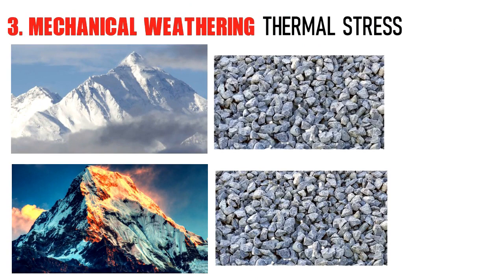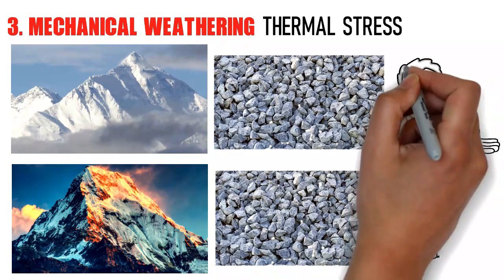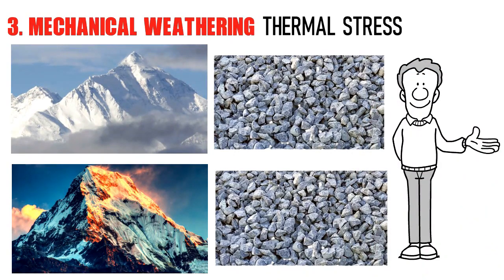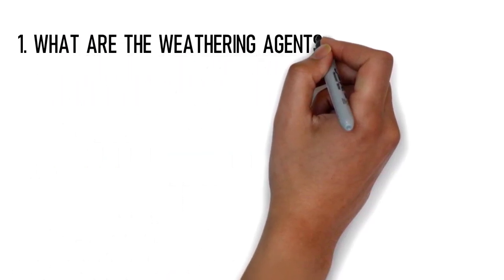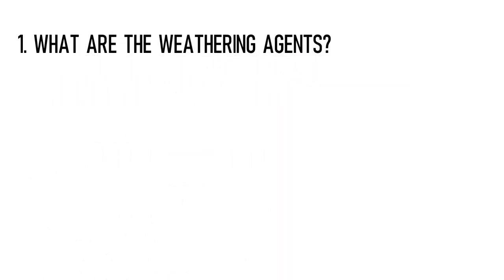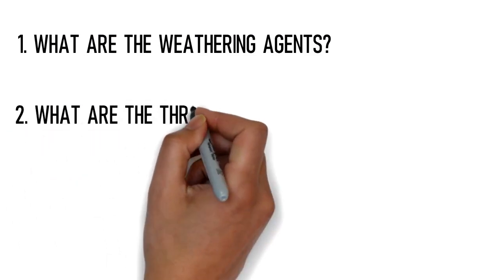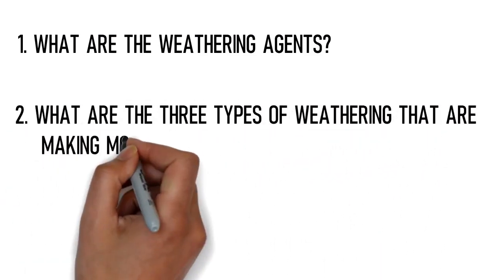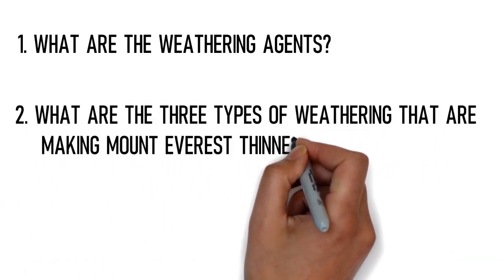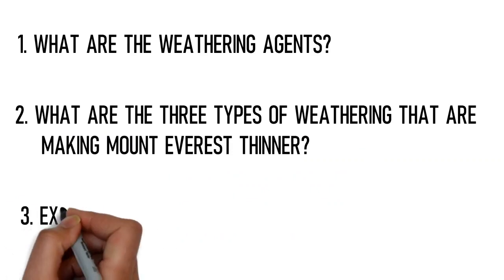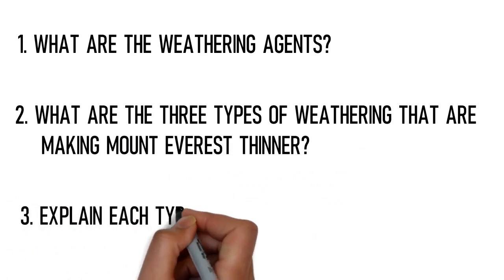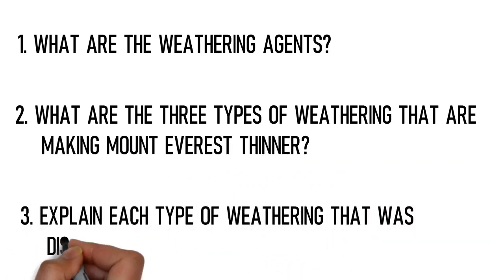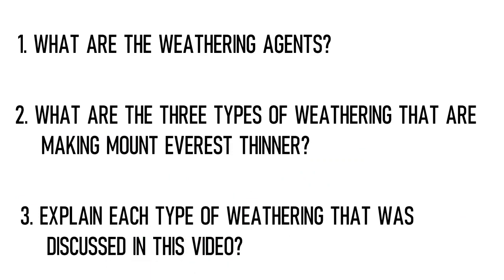Before we end this video, here are a few questions for a quick review. First: what are weathering agents? Pause the video and try to answer it. Second question: what are the types of weathering that are making Mount Everest thinner? And third: explain each type of weathering in your own words as discussed in this video.